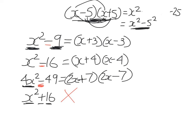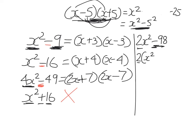Sometimes you'll need to use both methods — highest common factor and then difference of two squares. Always try highest common factor first. Take 2x squared minus 98. It's not straight difference of two squares because 2 and 98 are not perfect squares. But they share a common factor of 2. So take 2 out the front: 2 times (x squared minus 49). Now what's in the brackets is the difference of two squares. Apply it: two brackets, square root of x squared is x, square root of 49 is 7, one plus one minus. So fully factorized: 2(x + 7)(x − 7).